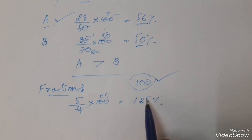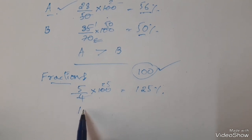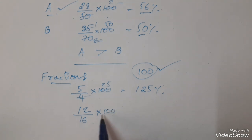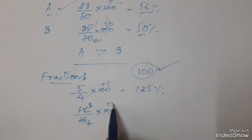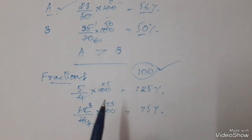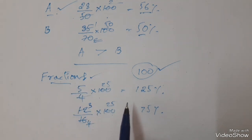Is it clear? One more example: suppose 12 by 16 is given. How can you convert into percentage? 12 by 16 into 100. Here 4 fours, 4 threes, 4 twenty-fives, 25 into 3 gives 75 percent. So when you are given fractions and want to convert them into percentages, simply multiply with 100.